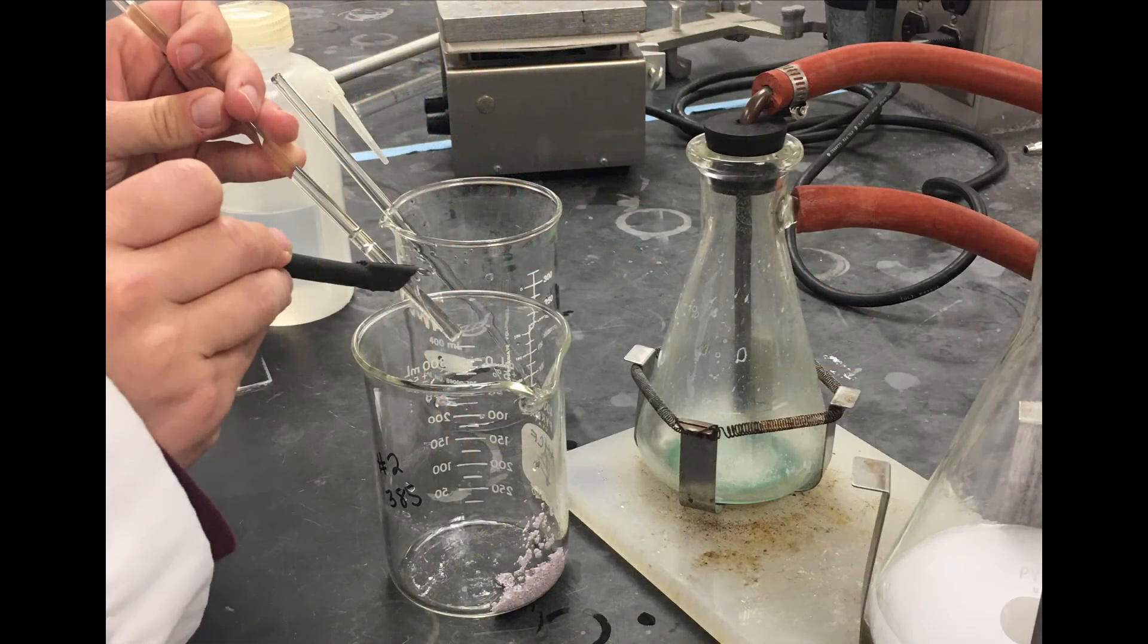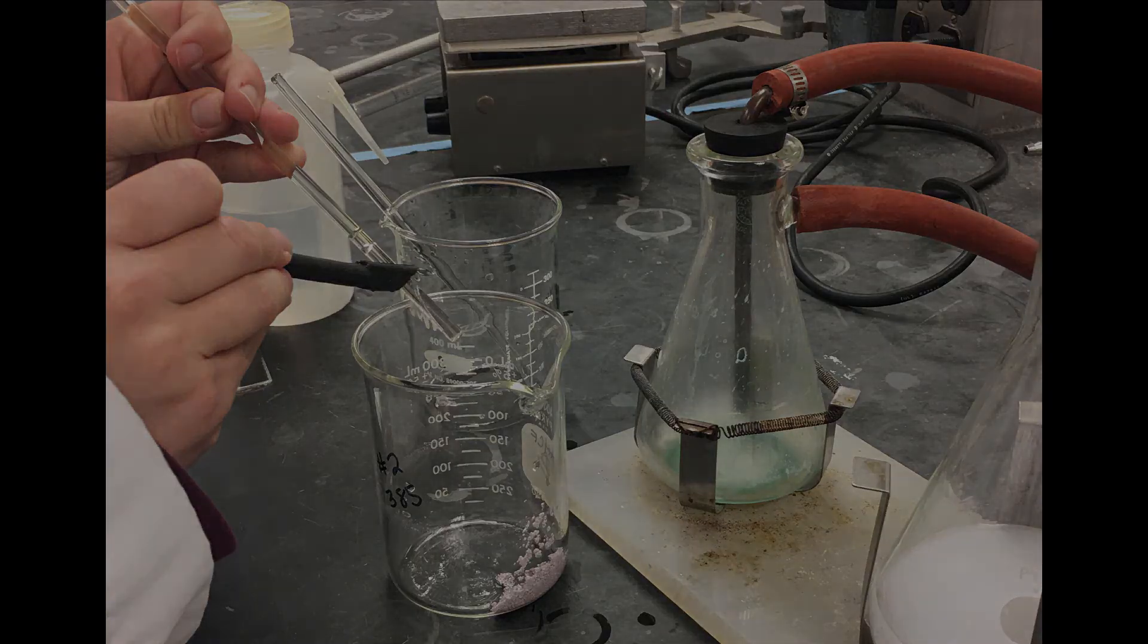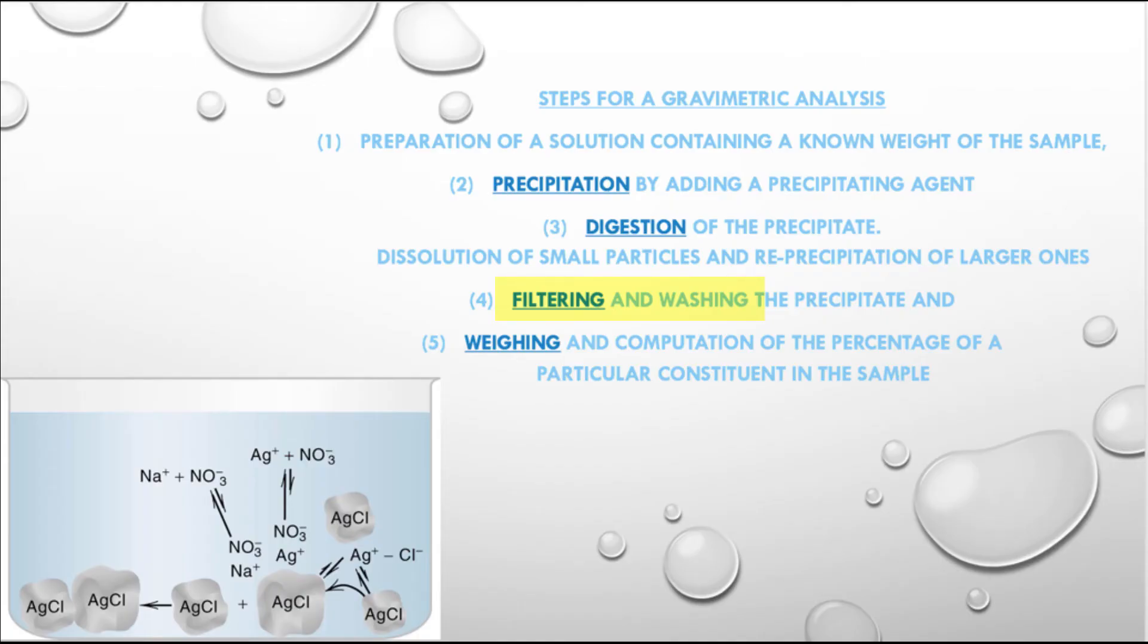Use your rubber policeman and acid wash to get the last traces of precipitate into your crucible. Wash the precipitate with acidic water. Then proceed with drying to bring to constant mass.